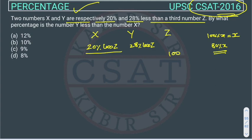So 20% less of Z - you can directly take 80% of 100.